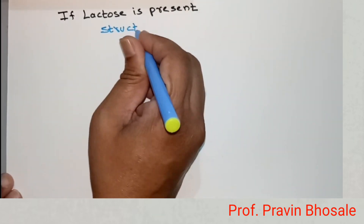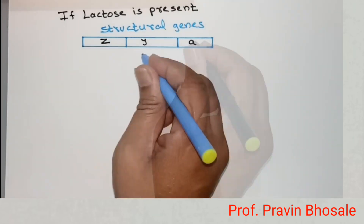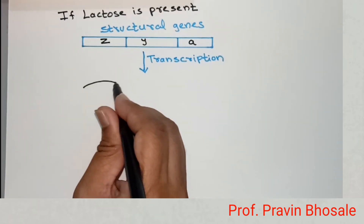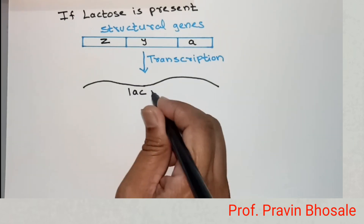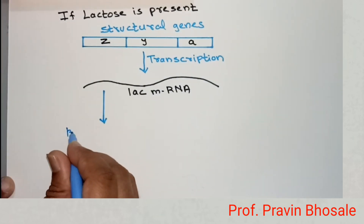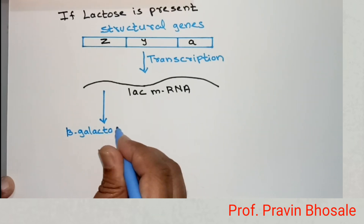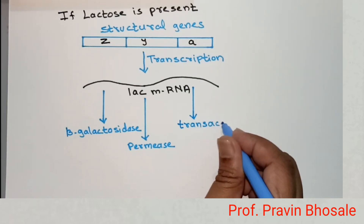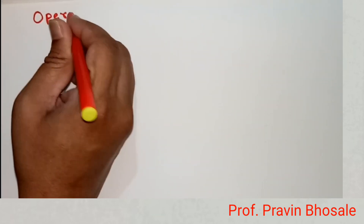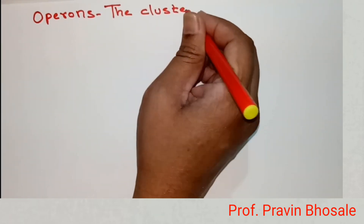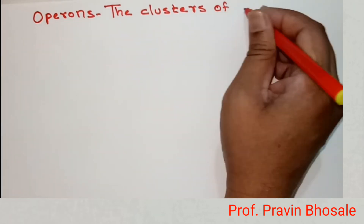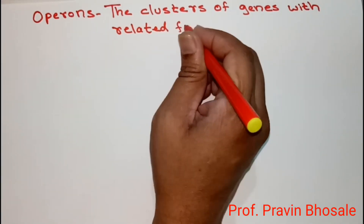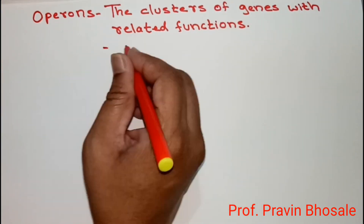If lactose is present, the three structural genes Z, Y, and A play a very important role. All structural genes in the process of transcription produce lac mRNA, and lac mRNA in the process of translation produces the enzymes beta-galactosidase, permease, and transacetylase. The cluster of genes with related function is called an operon.